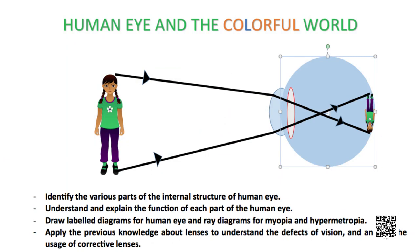By the end of our discussion today, you will be able to identify various parts of the internal structure of the human eye, understand and explain the function of each and every part. We will talk about myopia and hypermetropia, which are the defects of vision, and also presbyopia. You will be able to apply the knowledge about lenses to understand the defects of vision and analyze the usage of corrective lenses.